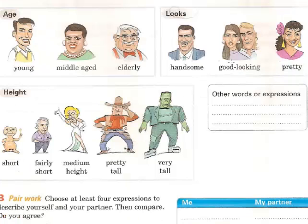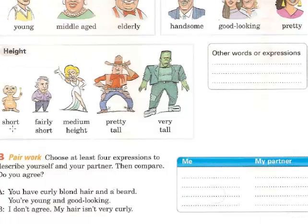'Good-looking' is for men and women, 'pretty' is for women, and 'handsome' is for men. For height, we have: short, fairly short, medium, pretty tall, and very tall. You have to complete all the words or expressions.